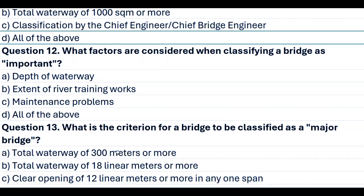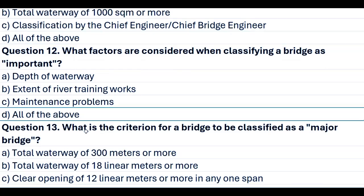Question 12. What factors are considered when classifying a bridge as important? A. Depth of waterway. B. Extent of river training works. C. Maintenance problems. D. All of the above. Answer D. All of the above.